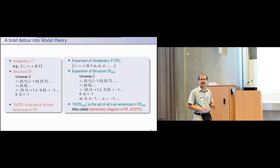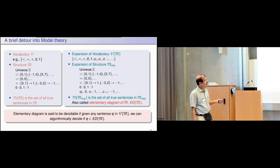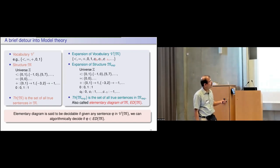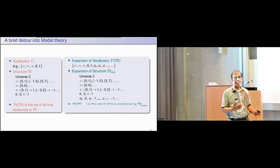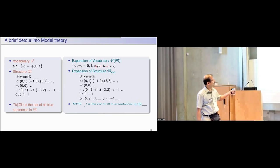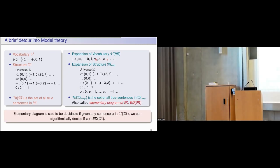The elementary diagram is said to be decidable if, given any sentence over this expanded vocabulary, we can algorithmically decide whether that sentence is true or not. This is the usual way of defining the theory of a structure, except that here the structure itself has been expanded.